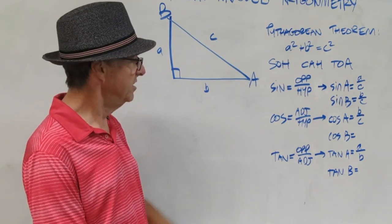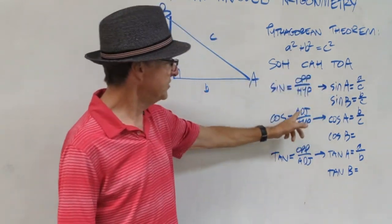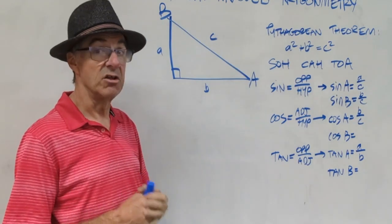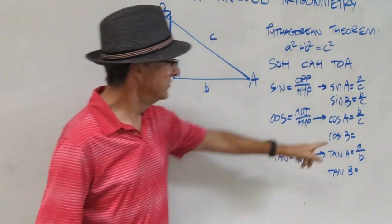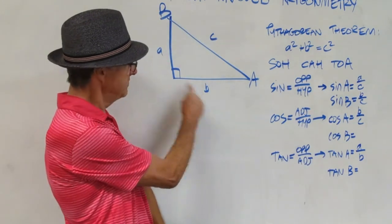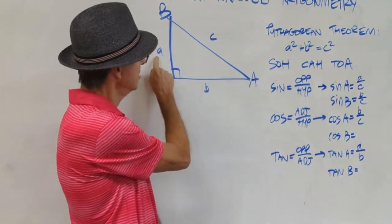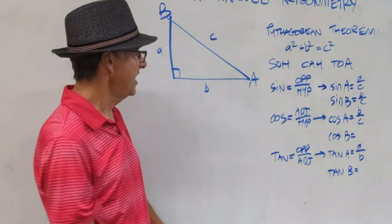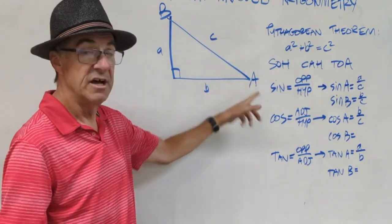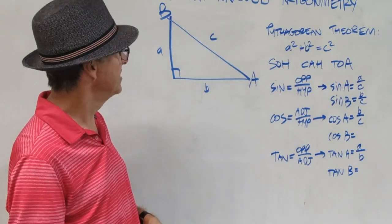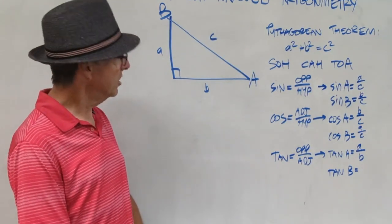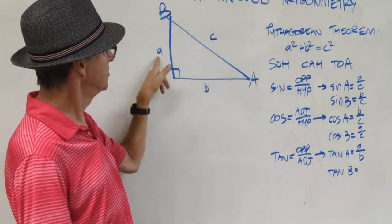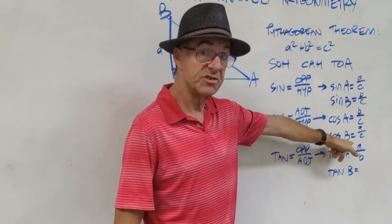Let's take a look at cosine. Cosine — the CAH — is adjacent over hypotenuse. That's the side next to the angle over the hypotenuse. So cosine of angle A would be B over C, because B is next to A, not across from it. Pause the video and write down the ratio for cosine of angle B. Cosine of B is adjacent over hypotenuse, so A over C.